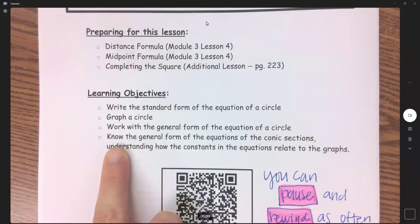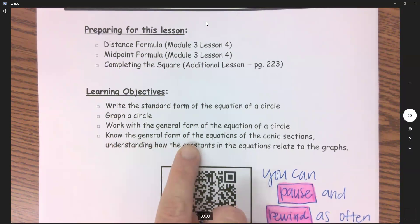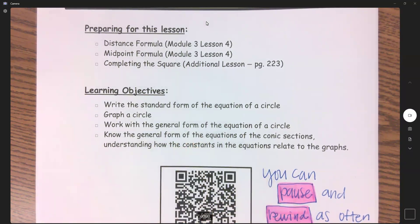And then this is going to be an objective for every conic section, and we're going to really be using it quite a bit once we get to Lesson 9 over Solving Non-Linear Systems of Equations. But we need to know the general form of the equations of conic sections, understanding how the constants of the equations relate to the graph. And so this is going to be an all four and five, if you consider the last one, Lesson 9, and we're going to be building on that learning objective.